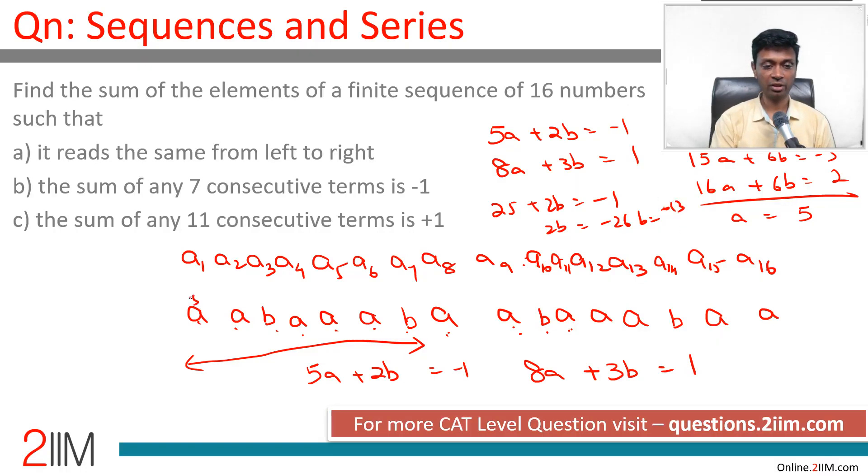Our expression is 5, 5, minus 13, 5, 5, 5, minus 13 and so on. We want to find sum of the elements. So how many b's are there? 1, 2, 3, 4. 16 numbers totally. So we have 12a and 4b in the system. 12 into 5 is 60 plus 4 into b is minus 52, which is 8.